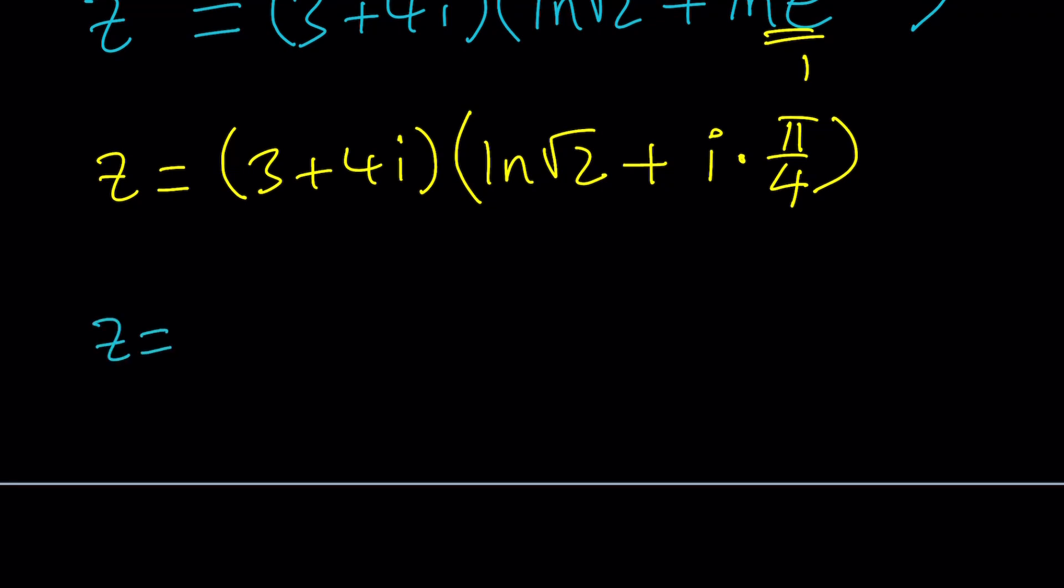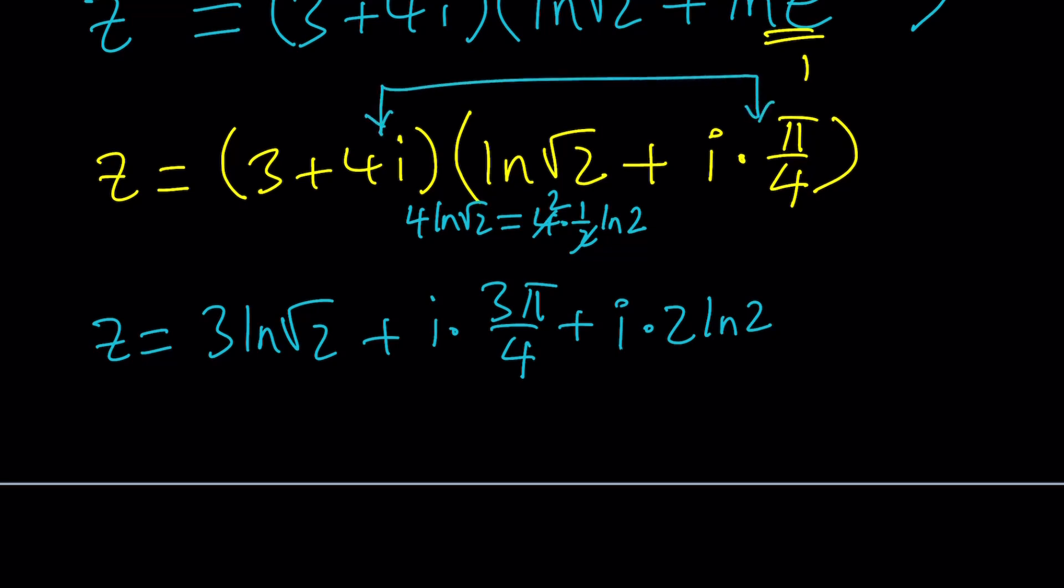So what we're going to do next is distribute everything and simplify this. We're going to multiply the real parts, 3 ln root 2. And then we're going to multiply 3 times that, which is i times 3 pi over 4. And then 4i multiplied by ln root 2. Something interesting is going to happen here. ln root 2 can actually be written as ln 2 to the power of 1 half, which is 4 times 1 half times ln 2. And then 2 goes into 4 twice. So this can be written as 2 ln 2. But there's an i, so i times 2 ln 2.